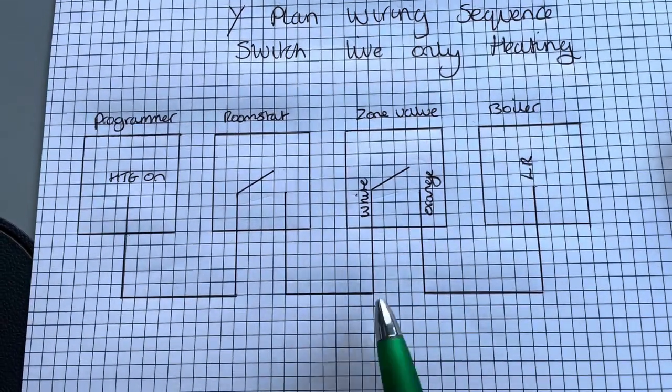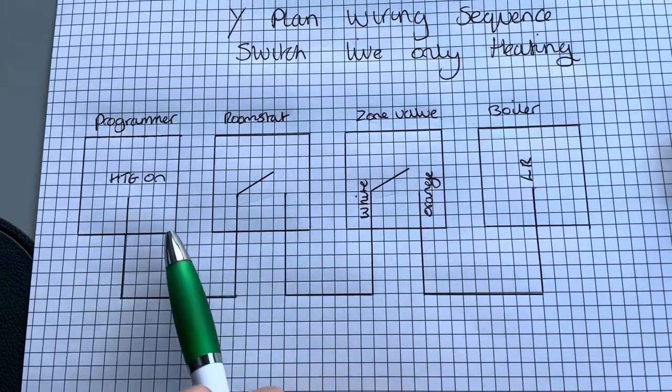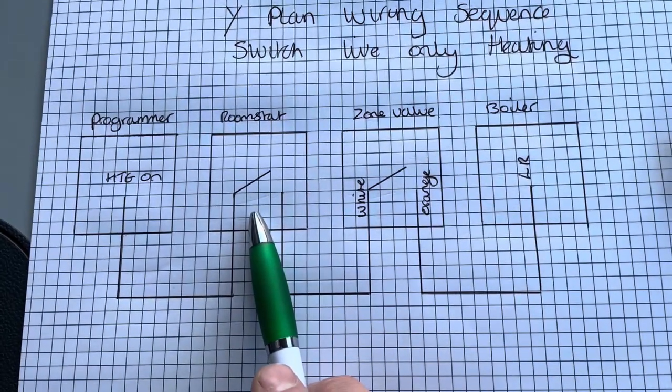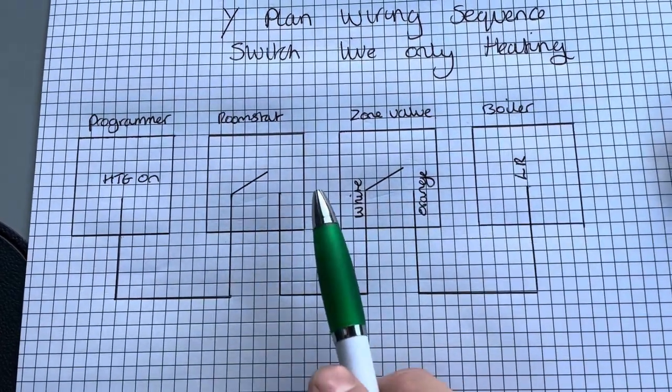If you were fault finding, if you were testing here and you had 240 on white, then you've already proved your programmer and your room stat are doing what they should do. If you're not getting power on your orange, then it's the micro switch, so you'd need to change the head.